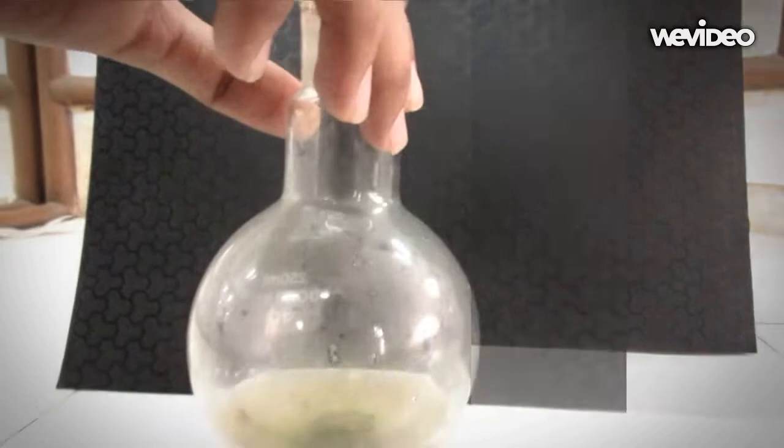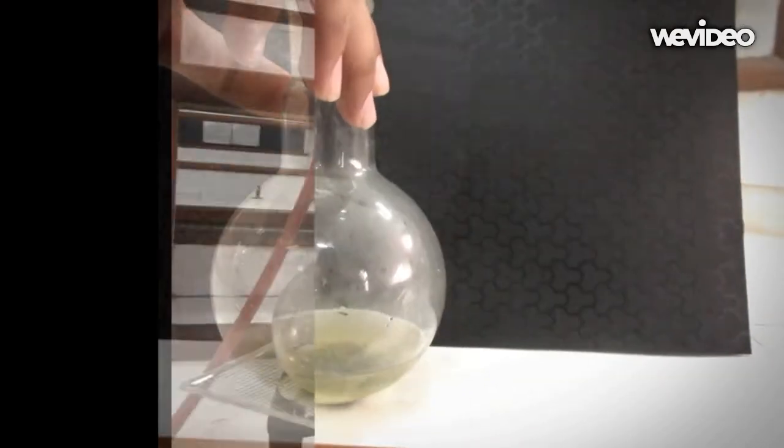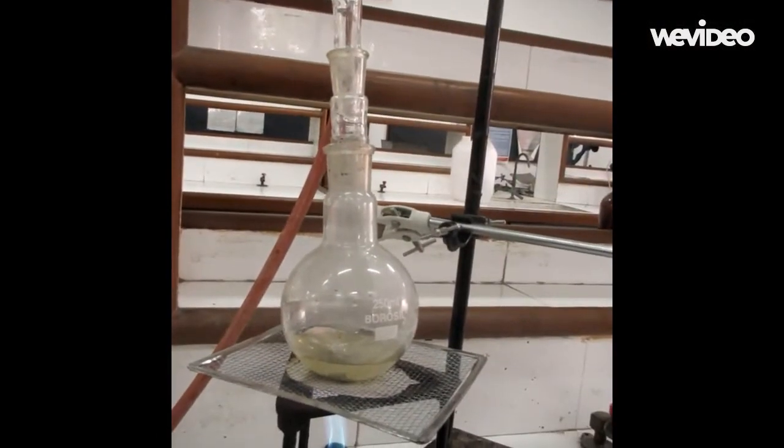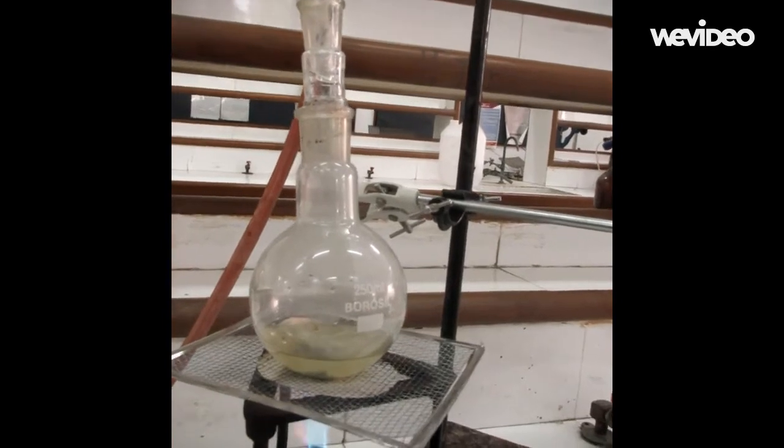To 10 milliliters of aniline, add 0.5 grams of zinc granules in a round bottom flask. Keep the flask containing aniline and zinc granules on a setup like this.